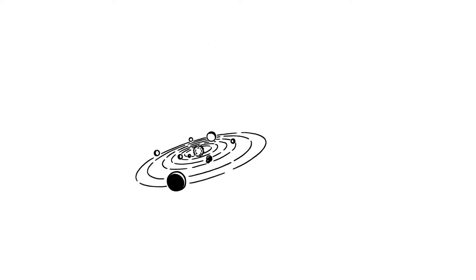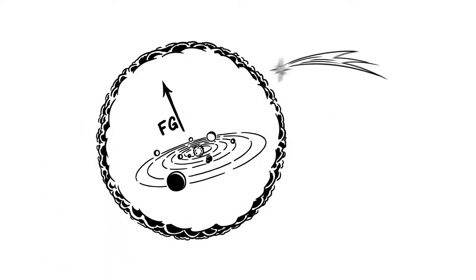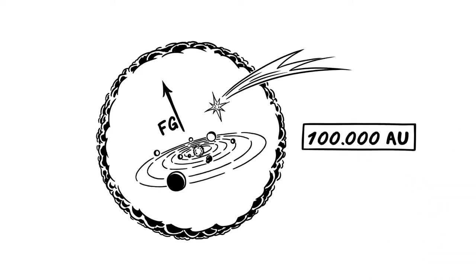But the solar system is much bigger. Its boundaries reach as far as the influence of the Sun's gravity. It extends to a place called the Oort Cloud, where most of the comets are believed to come from. Up to 100,000 astronomical units away.